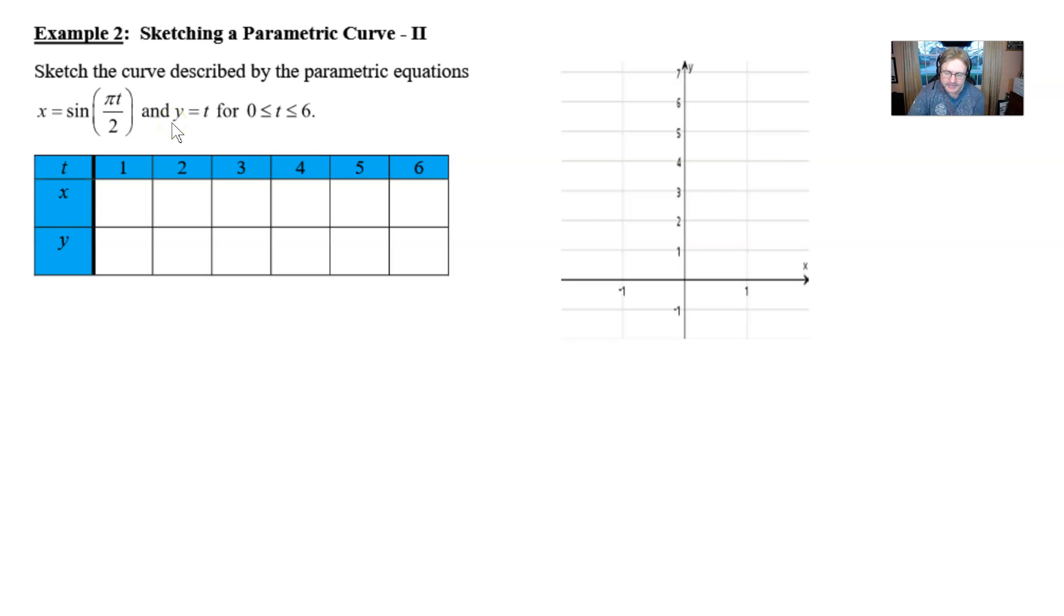And you can see that our t values will go from 0 to 6. So as always, we have a little chart that we set up and we tend to want to use the integer values here as best we can.